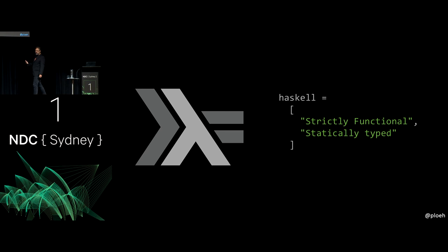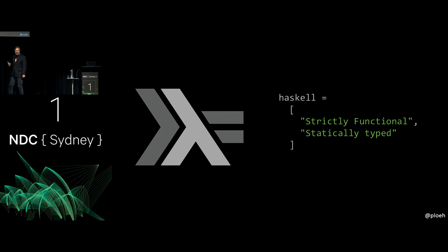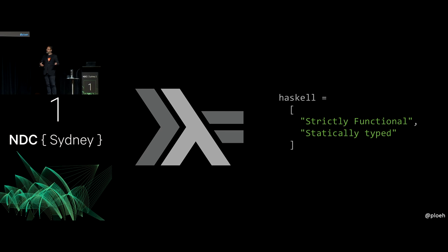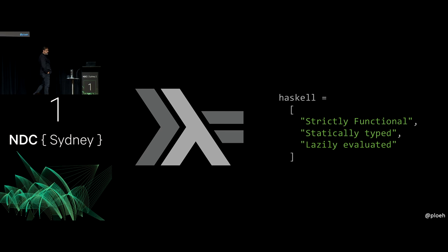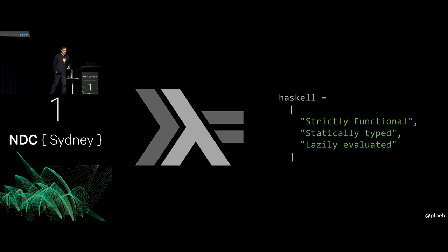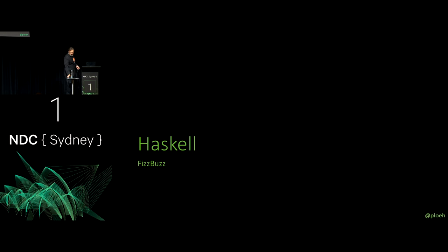Haskell is also statically typed. In fact, what you see as a bullet list on this slide is actually valid Haskell code — 'haskell' is a value of type list of strings. The square brackets indicate a list and the double-quoted values inside are strings. Notice there's no type declaration, yet it is statically typed because the compiler can infer the type. Haskell is also lazily evaluated, which is unusual compared to C# or Java, but it's not something we need to think much about for this kata.